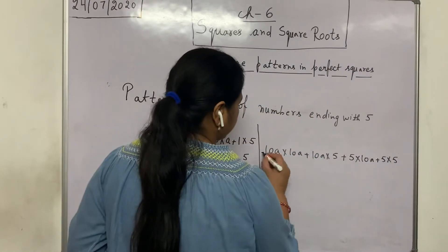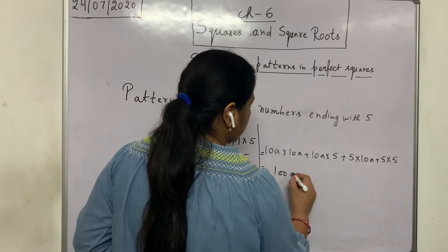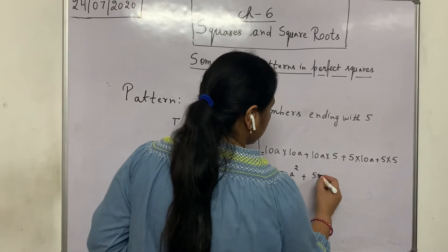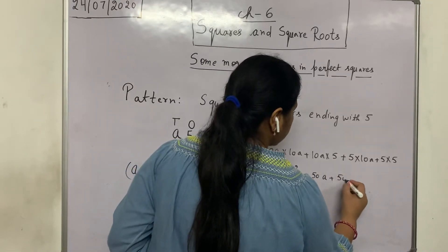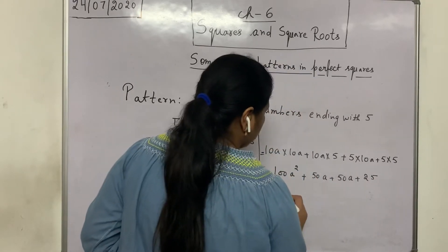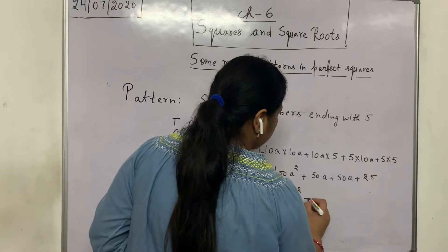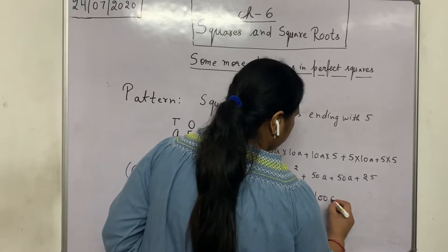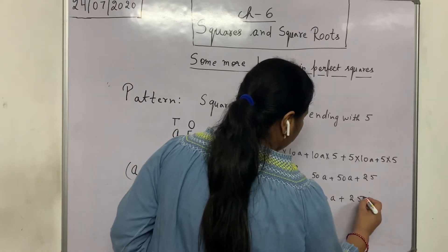Solve it. 100a² plus 50a plus 50a plus 25. 100a² plus 100a plus 25.